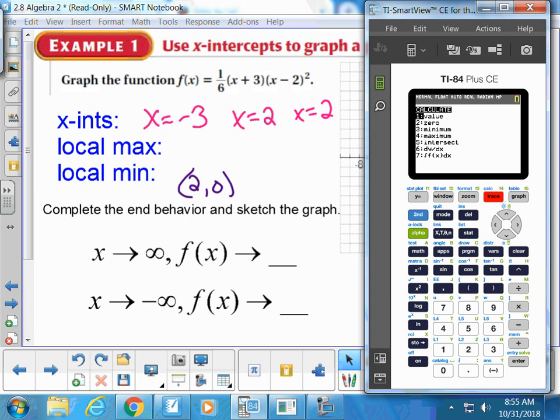What selection should we do this time for local maximum? Number four, maximum. I need a number to the left of this local maximum. Negative five works for me, so type in negative five and click enter. Then I need a number to the right, zero works for me.